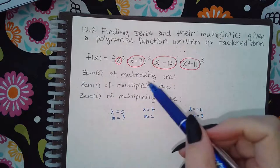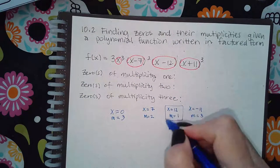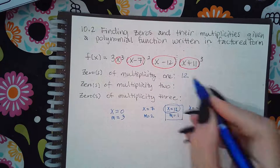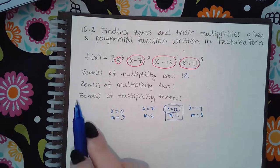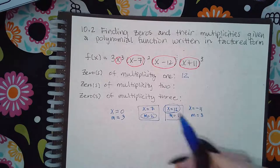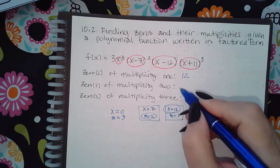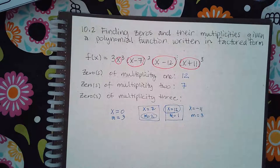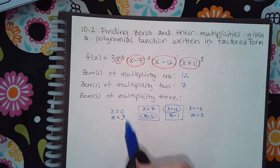It's only this guy, 12. Which zeros have multiplicity of two? It's going to be this factor, which the zero is only seven.